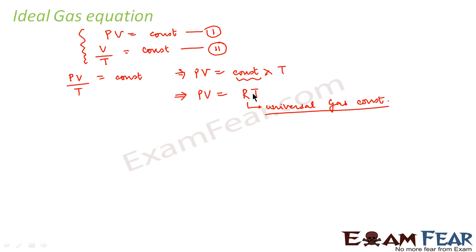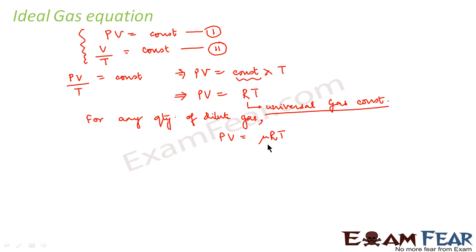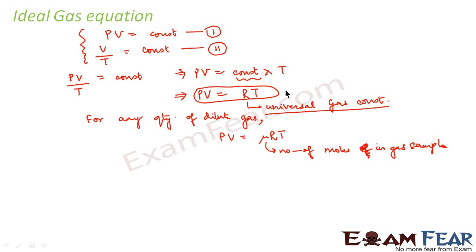Experimentally, it is found that this constant is capital R, known as the universal gas constant. For any quantity of dilute gas, we can write this equation as PV equals μRT, where μ is the number of moles in the gas sample. PV equals RT is the ideal gas equation for a single mole, and PV equals μRT when written in terms of moles.